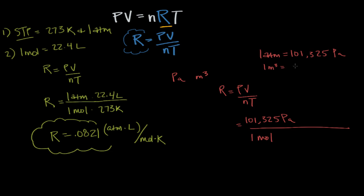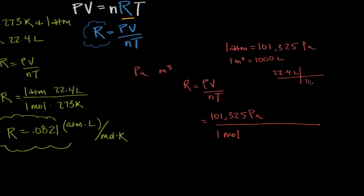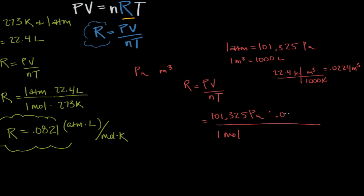One cubic meter is equal to 1,000 liters. This means that if we take 22.4 liters and we do a dimensional analysis, we're going to get 0.0224 meters cubed. That's the value we're going to use in our formula because we're still talking about one mole. So 0.0224. And then last but not least, we're still talking about standard temperature and pressure, which in Kelvin, the temperature would be 273. So we have our pressure, we have our volume, we have our moles, and we have our temperature.